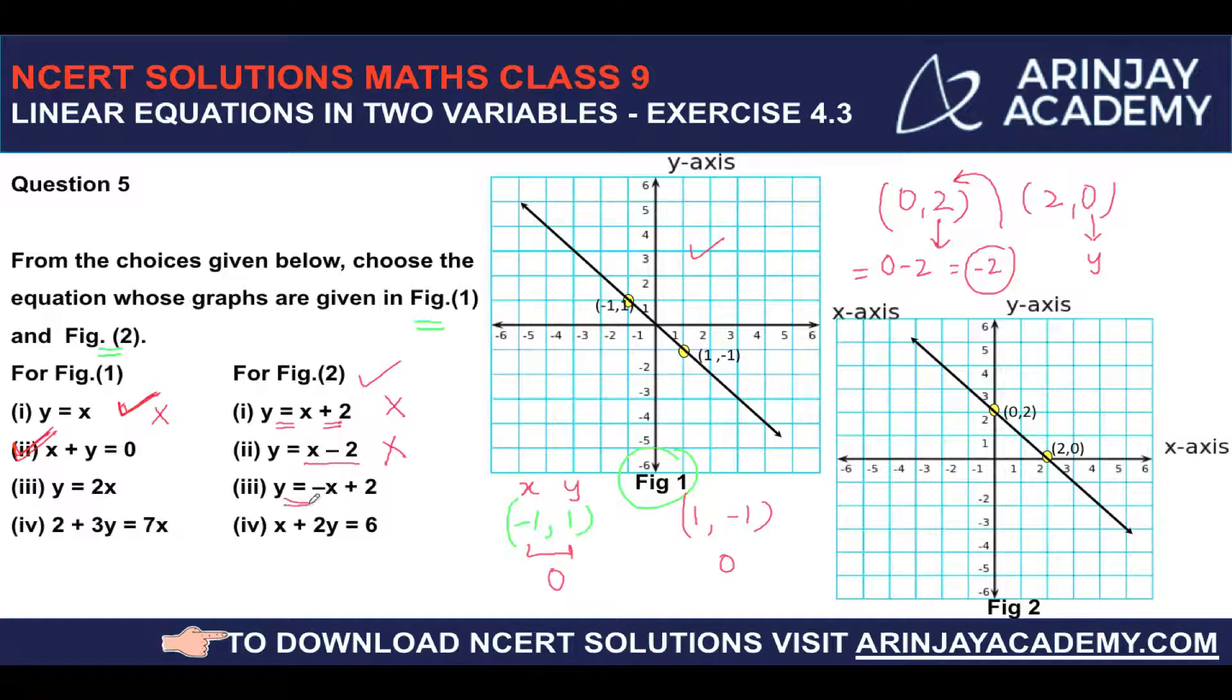Let us look at the third one. y = -x + 2. Now, if I check this equation for (0, 2), the value of x is 0. So -0 + 2, which is 2. Now this is correct for this one.